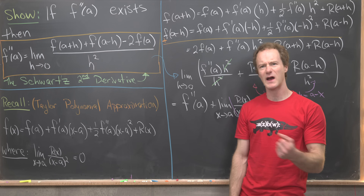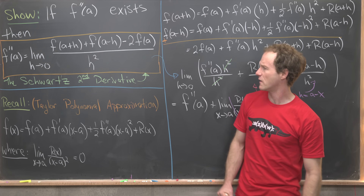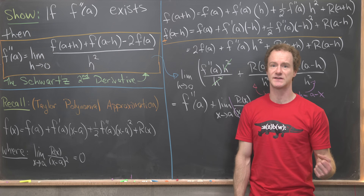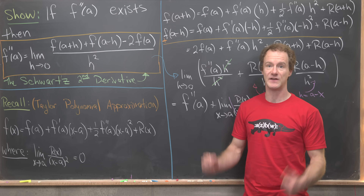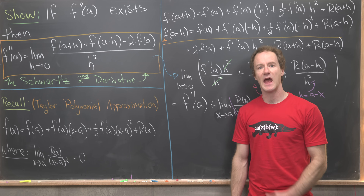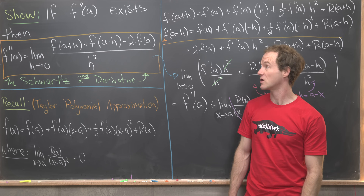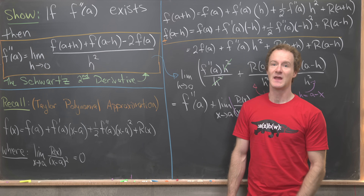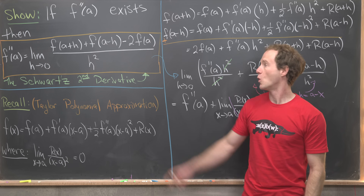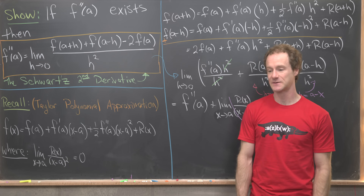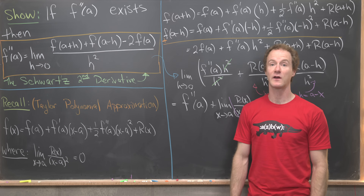Now we might want to look at why this is called the Schwartz second derivative and not just the limit definition of the second derivative. It turns out there's an example of a function that is not twice differentiable where this limit does exist. So we'll look at that example next.